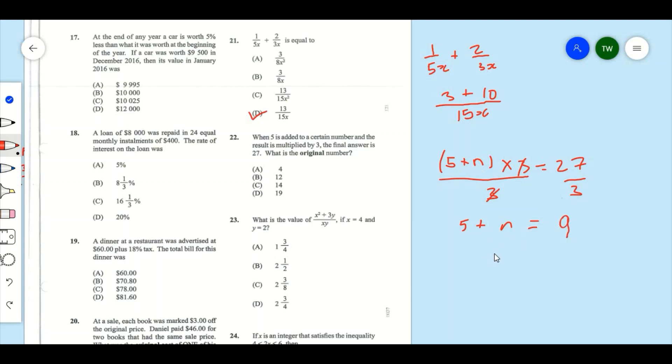Now N is going to equal to, what we're going to do is subtract 5 from both sides, and if we subtract 5 from both sides, N is going to equal to 4. So our answer here is going to be B.